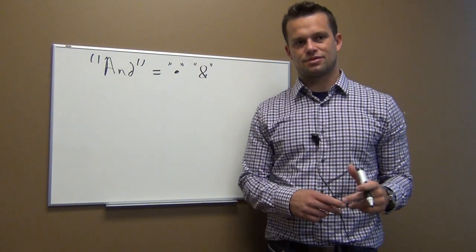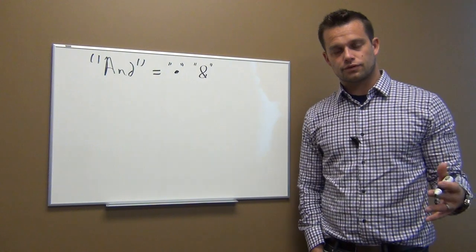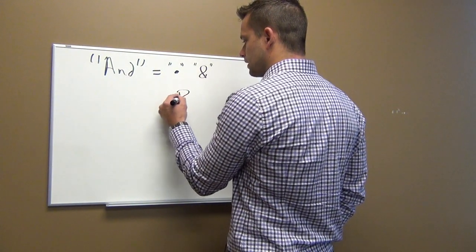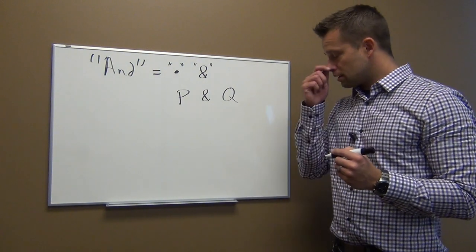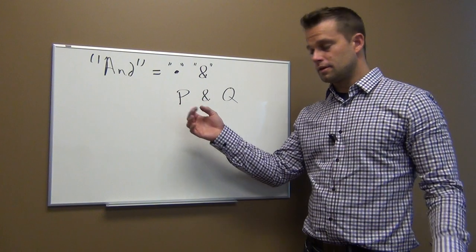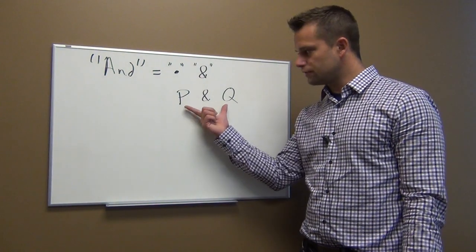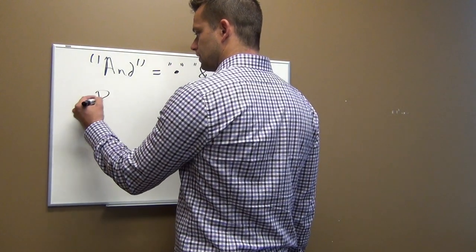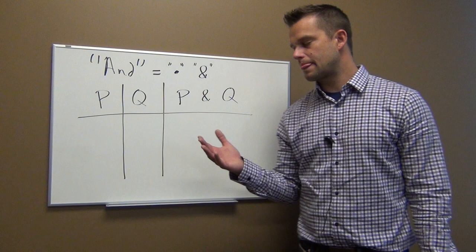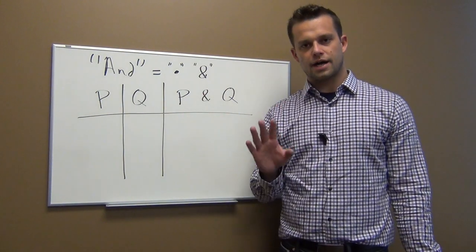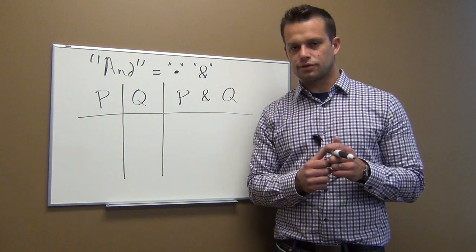The name for that symbol is an ampersand. So in order to analyze the overall truth value of an AND statement, I'll use our textbook's symbolization: P and Q. To set up a truth table, if you have two variables, you put those out to the left-hand side and make a little graph. When you have two variables, there are four lines in your truth table — four different ways we can combine the truth values of P and Q.